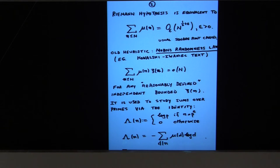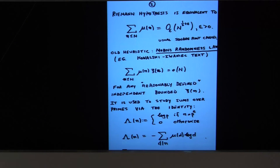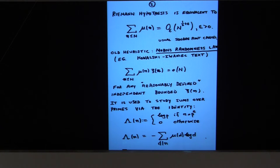In the recent book by Kowalski and Iwaniec, they discuss the following randomness law — going back at least to Vinogradov and Linnik — which says: if you sum mu(n) against an arbitrary bounded function xi(n), will that sum be little-o of N? If xi(n) is one, that's the prime number theorem. The randomness law says that if xi(n) is a reasonably defined function independent of Möbius — meaning if it were Möbius itself it wouldn't cancel — then this sum should cancel. This is not a well-defined notion, but it predicts every answer correctly.